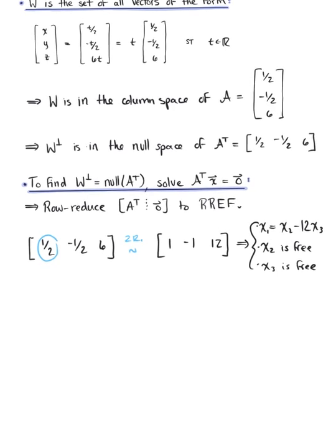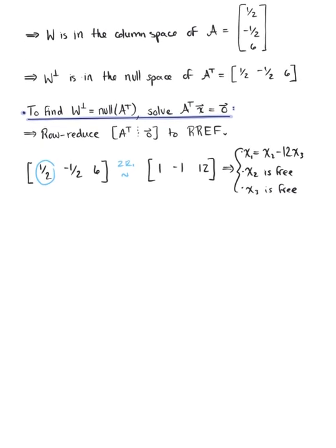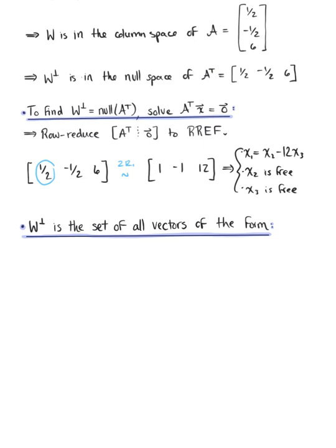With this solution, we can now state that W perp is the set of vectors of the following form. We have a vector x in R3 with the components x sub 1, x sub 2, x sub 3, and we know that x sub 1 is being defined as x sub 2 minus 12 times x sub 3, that x sub 2 is a free variable so it's just itself, and that x sub 3 is also a free variable so it's just itself.